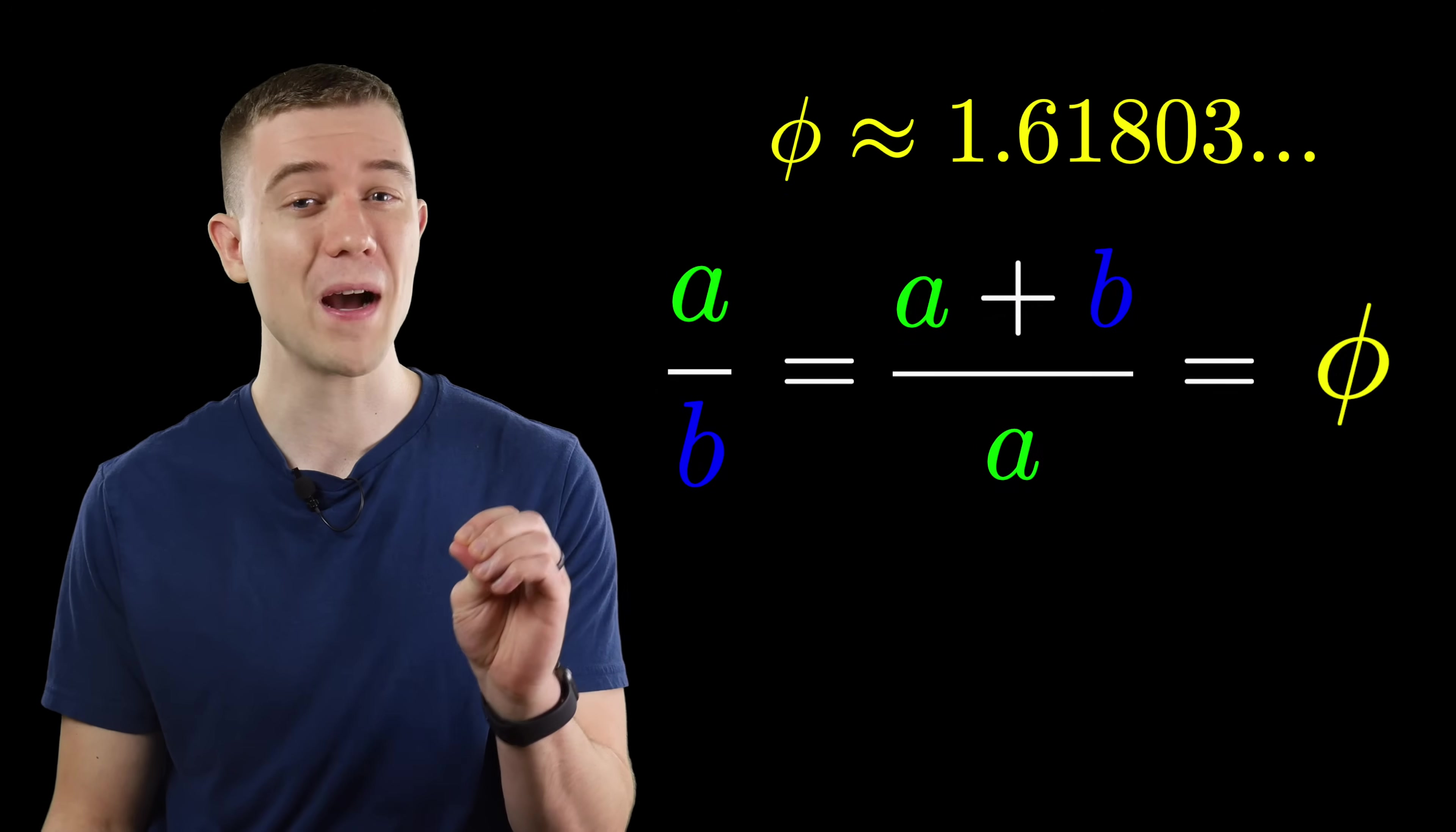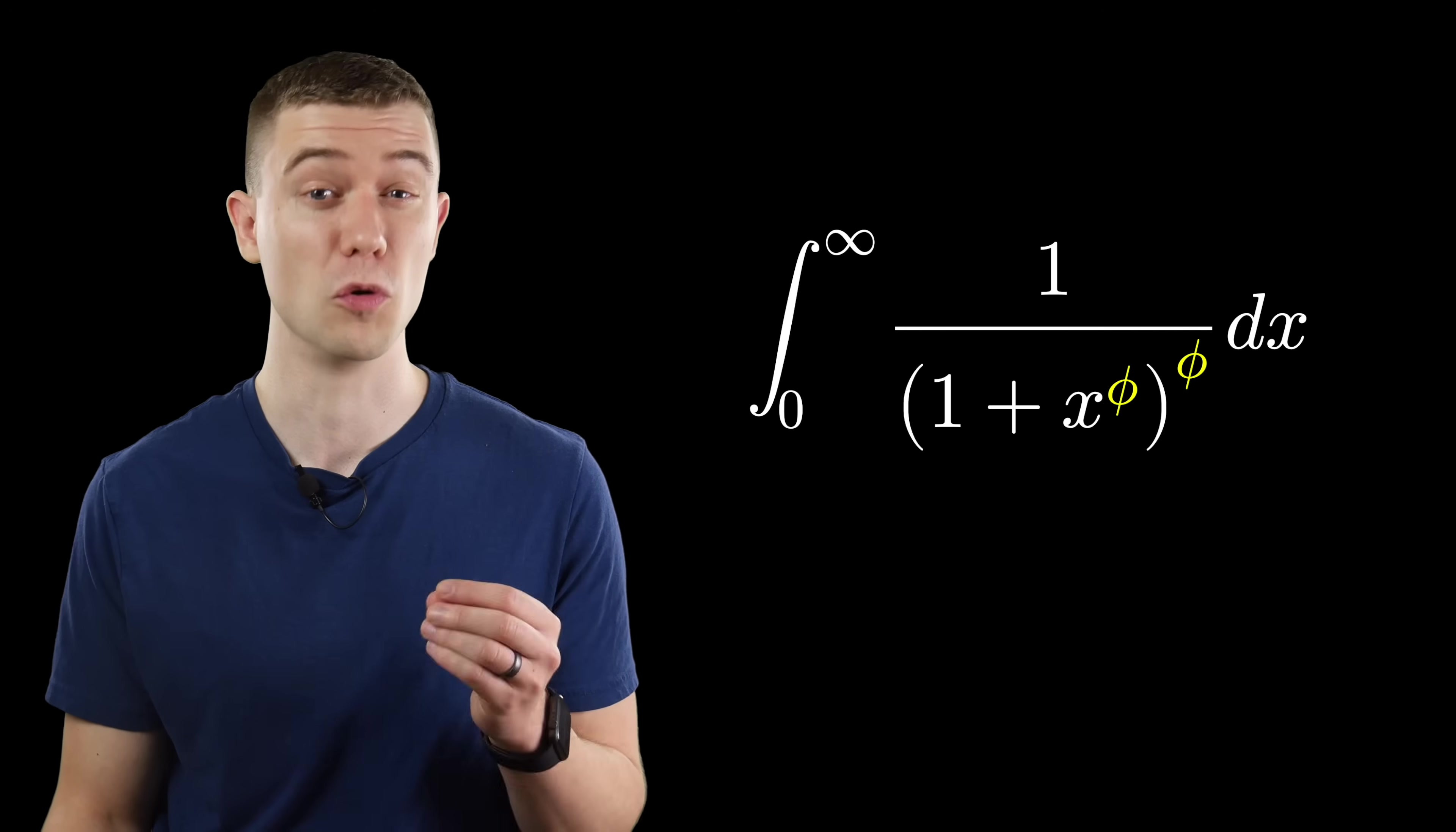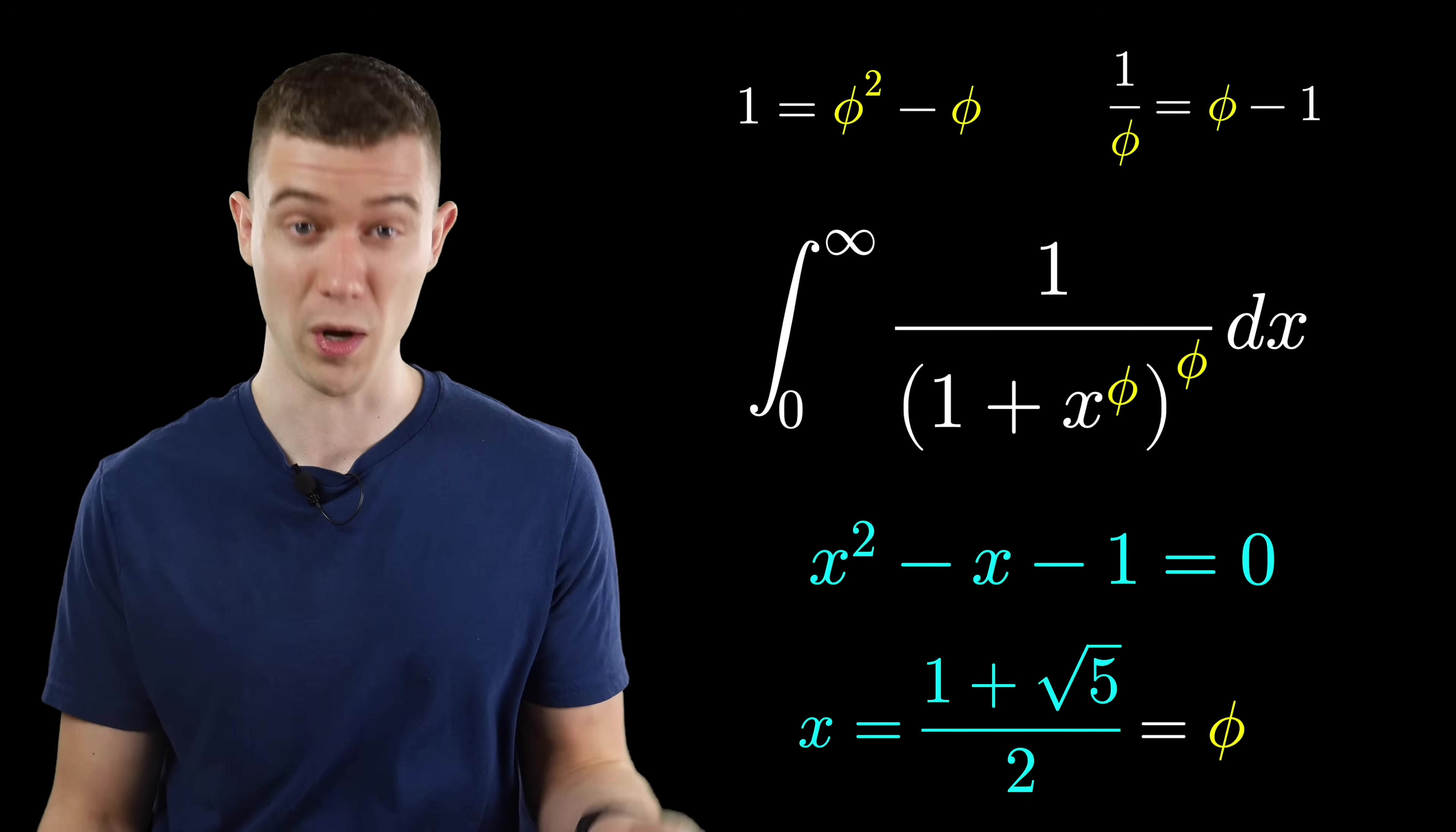But what I want to talk about is this golden integral, which admittedly is a little intimidating, now that you know what phi is and having it show up in those exponents. To solve this, we'll have to know a few facts about the golden ratio, namely that it's a solution to this quadratic equation, which is to say, phi squared minus phi equals 1, or dividing by phi gives us 1 over phi equals phi minus 1.